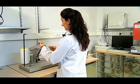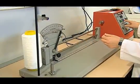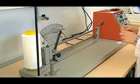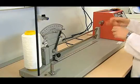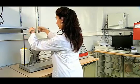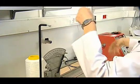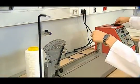Bu testimiz için büküm yönünü tayin ediyoruz ve cihazımıza bunu seçiyoruz. Daha sonra yaklaşık 5 metre kadar ipliğimizi bobinden çekip makas yardımıyla kesiyoruz.